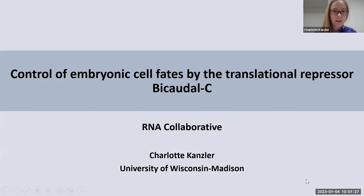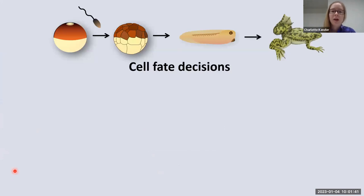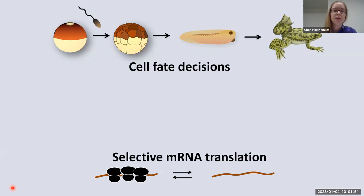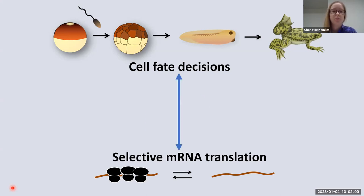Thank you for coming to my talk on the control of embryonic cell fates by the translational repressor Bicoid-C. Our lab is interested in cell fate decisions in the early vertebrate embryo using the frog Xenopus laevis as our model. Our lab also has an interest in translational control, and the focus of our lab is a protein at the intersection of these interests, the translational repressor Bicoid-C.